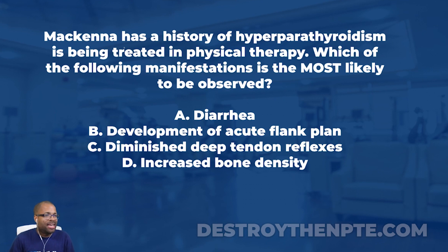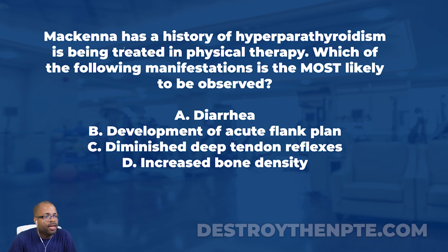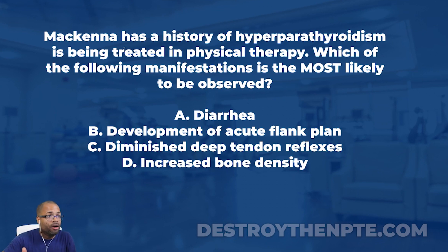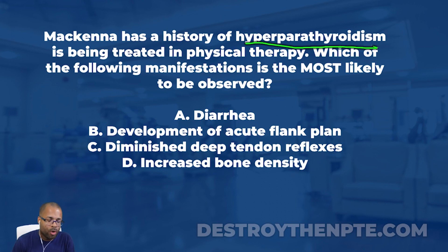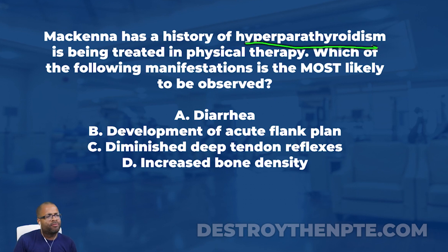So let's go back to the top of this question. We're getting into metabolic and endocrine content, a little bit of that other system. You really have to understand your glands very well — what are the different hormones produced and what do those hormones do? McKenna has a history of hyperparathyroidism. Notice how we didn't say hyperthyroidism — the thyroid and the parathyroid are two different endocrine glands.